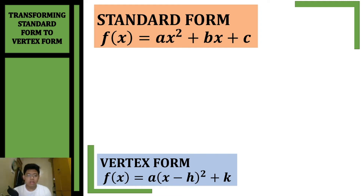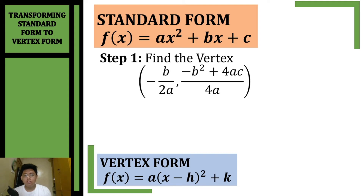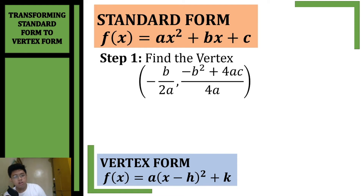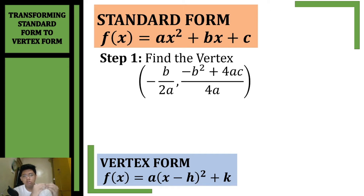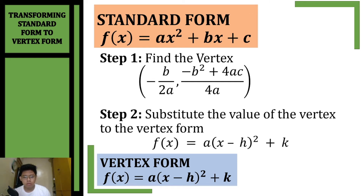Plus k. Here are the steps: first, we need to find the vertex. We have a formula for finding h, which is negative b over 2a, and for the value of k, which is negative b squared plus 4ac all over 4a. We can also use the alternative version: substitute the value of h into our standard form to get k. Second step is to substitute the value of the vertex into the vertex form, using the values of a, h, and k.